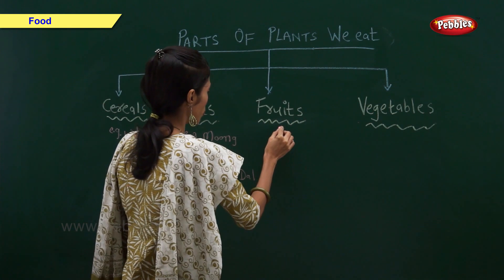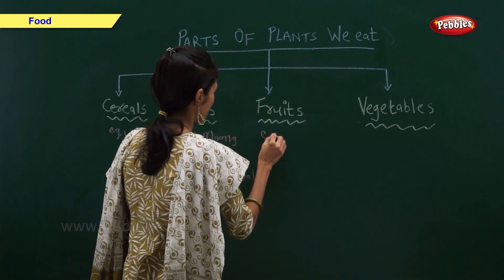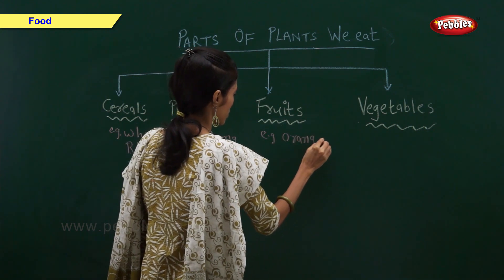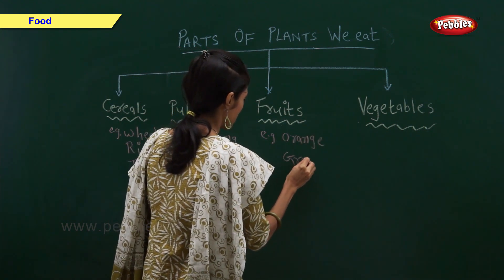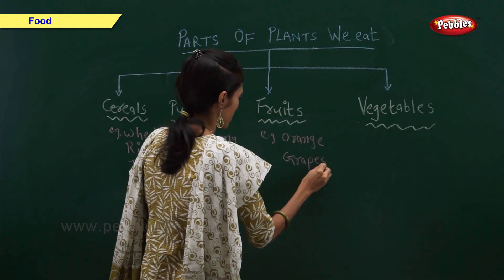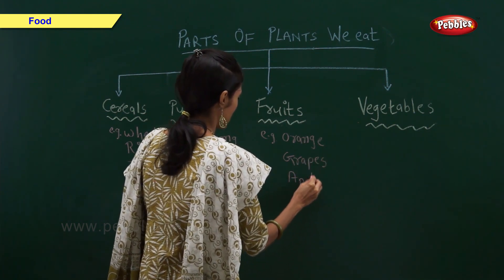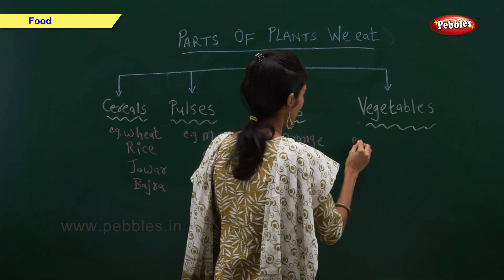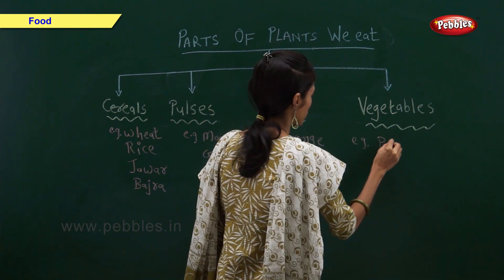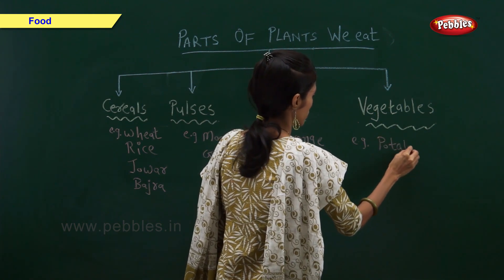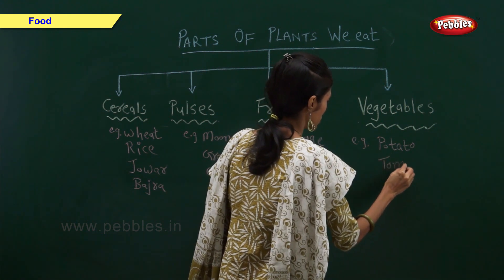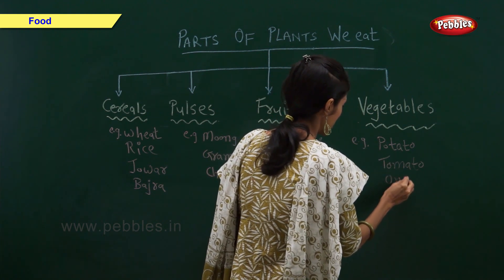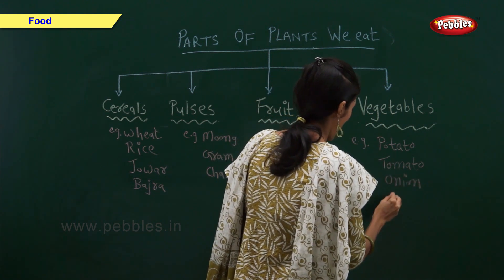Examples of fruits are orange, grapes, and apple. Examples of vegetables are tomato, onion, and brinjal.